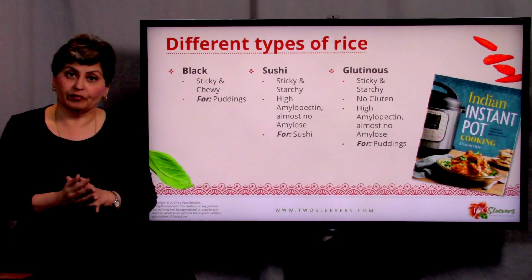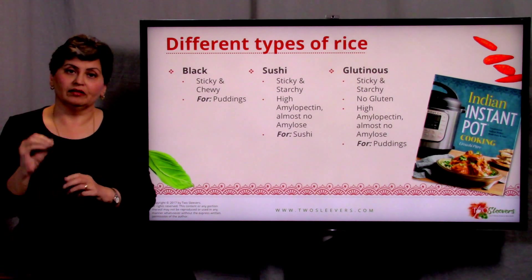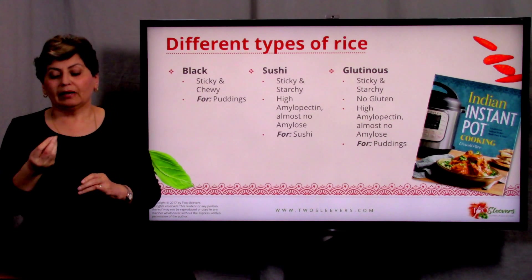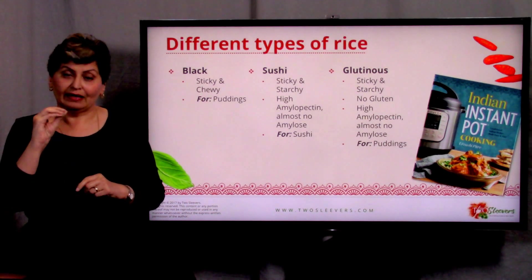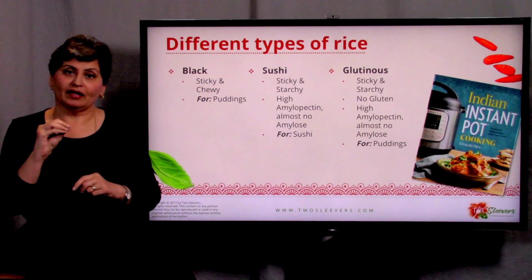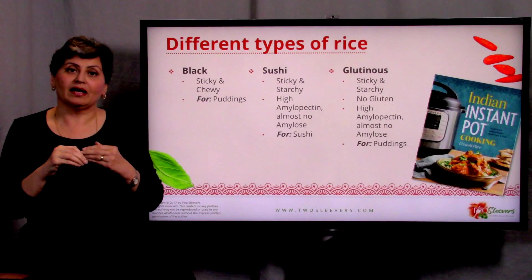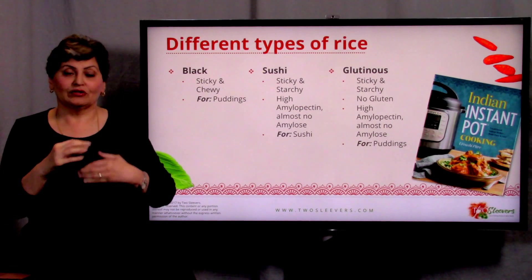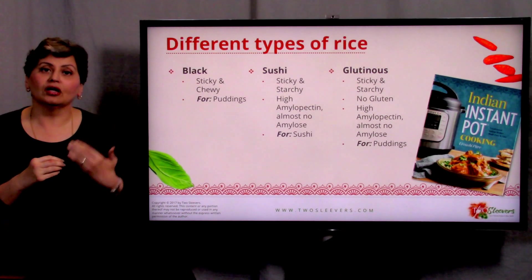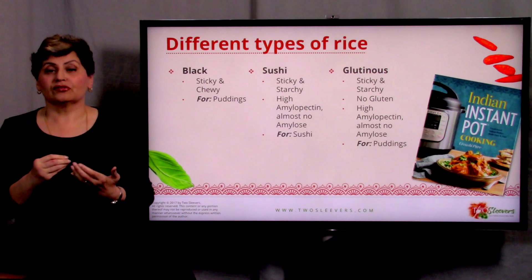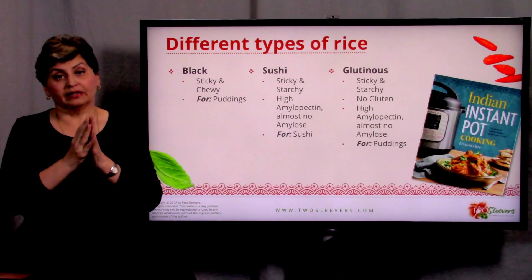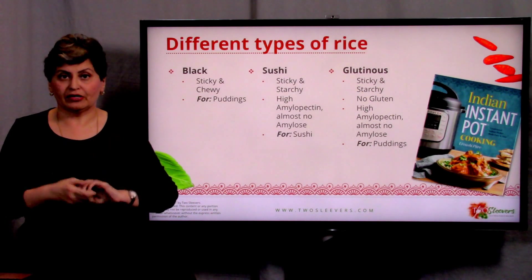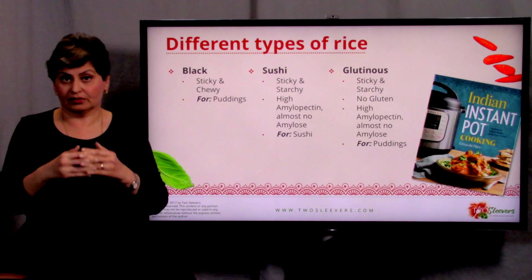Black rice was known as forbidden rice — it was available to only a very few of the royalty. Black rice has a coating, and that coating has a chemical in it which is the same as what makes eggplant get its color. That natural coloring that black rice has is a result of that chemical. It has a little husk on it, as does brown rice and red wehane rice — those rices all have a husk on them.